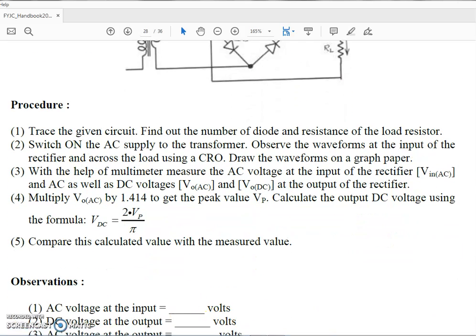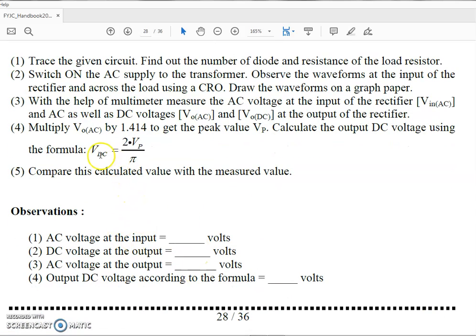These three measurements you will have to make and after making these three measurements, with the help of this formula, you have to calculate VDC, which is 2 into Vp upon Pi. Now here Vp is given by multiplying 1.414 to Vin AC. There is a mistake here. Instead of Vout AC to Vin AC, that means to the first reading, you are going to multiply by 1.414 so as to get your peak voltage and then to that you multiply by 2 and divide by Pi so as to get output DC voltage as per the formula.